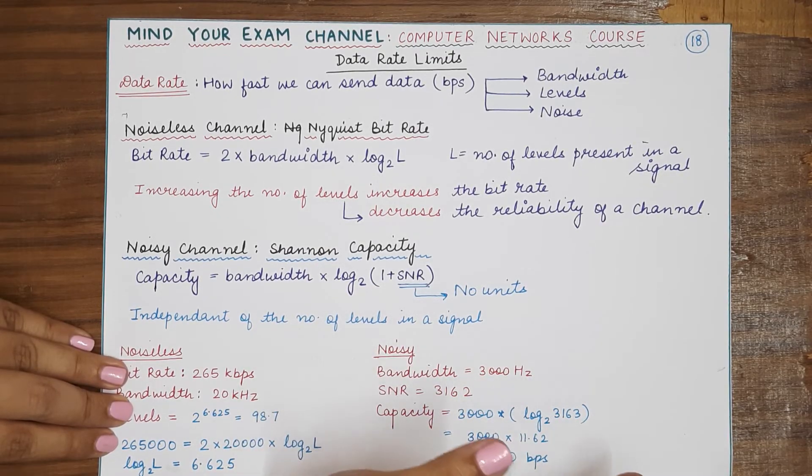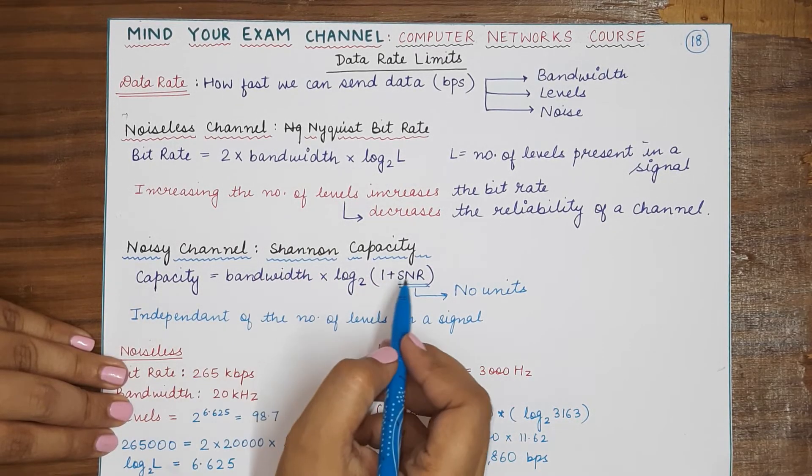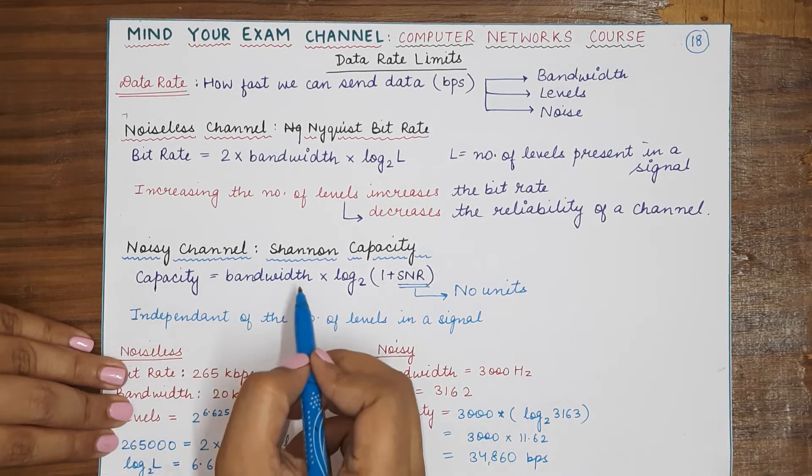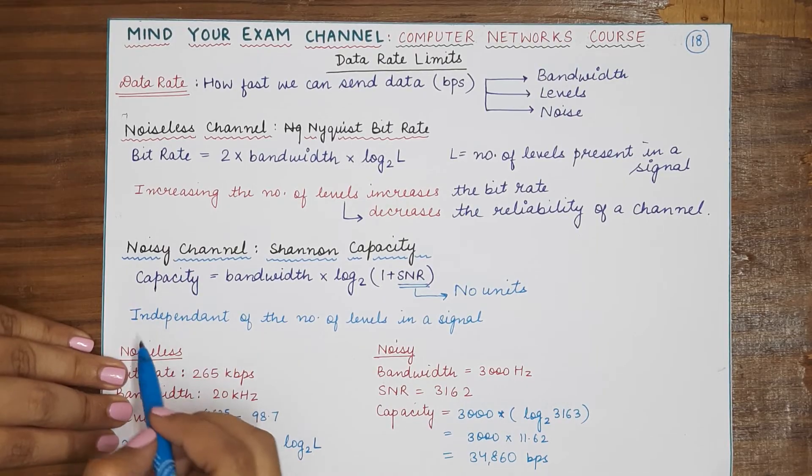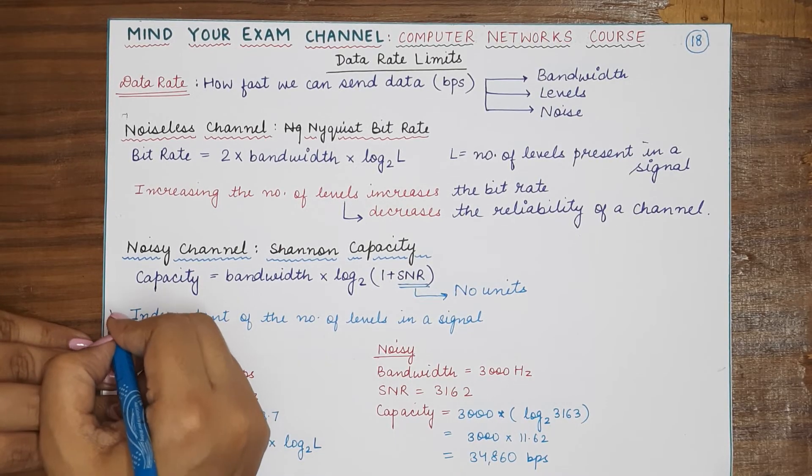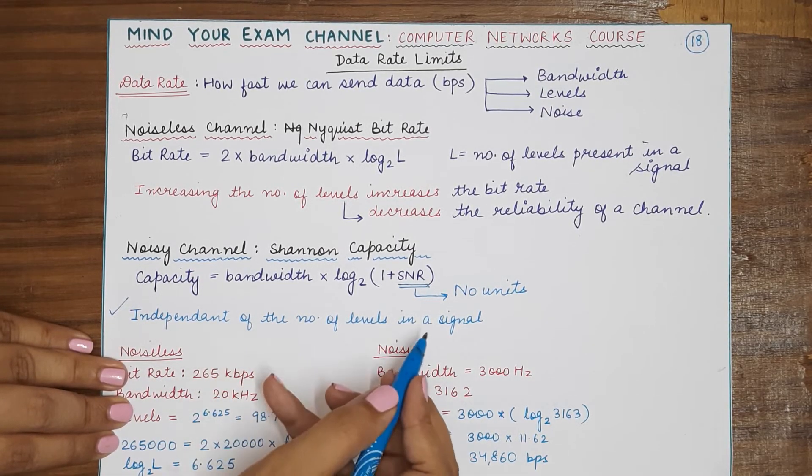This is the Shannon capacity formula which is used for noisy channel, and here you must notice that this is independent of the number of levels in a signal.